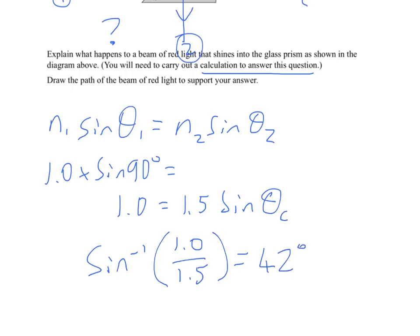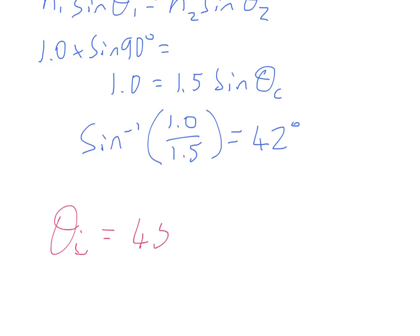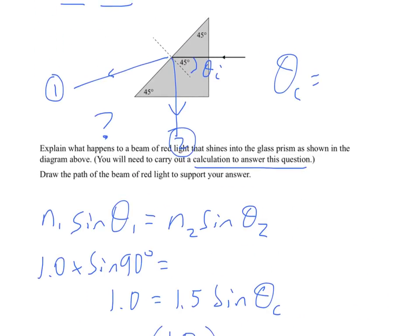42 degrees, that means the angle of incidence that we have here is 45 degrees, which is greater than the critical angle, which is 42 degrees. So if we go back up, we're going to see that it's not this one, it is in fact this one, number two. So that's our ray that we would draw in there. And there you go.